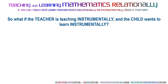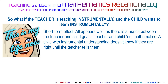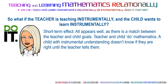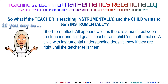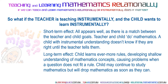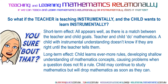What if the teacher is teaching instrumentally and the child wants to learn instrumentally? Short-term effect: all appears well, as there is a match between the teacher and child's goals — teacher and child do mathematics. A child with instrumental understanding doesn't know if they are right until the teacher tells them. Long-term effect: the child learns ever more rules, developing shallow understanding of mathematics concepts, causing problems when a question does not fit a rule.